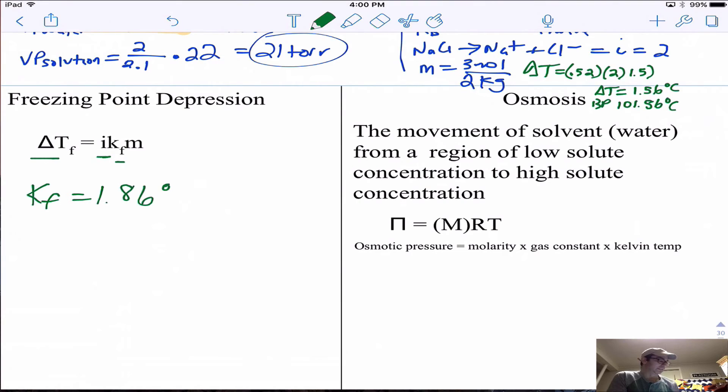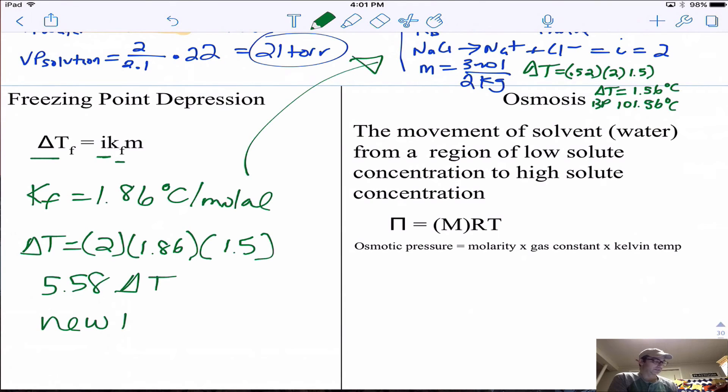Same idea: ΔT = i × KF × m. For water, KF is 1.86 degrees Celsius per molal. Using the information above, let's see what temperature the water would freeze at. ΔT equals i which was 2 for NaCl, KF is 1.86, and m is 1.5. We do 2 times 1.86 times 1.5 and get 5.58. Water normally freezes at zero, but now the new freezing point is negative 5.58 degrees Celsius.